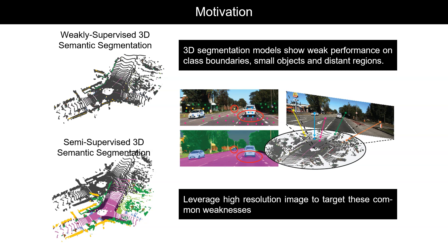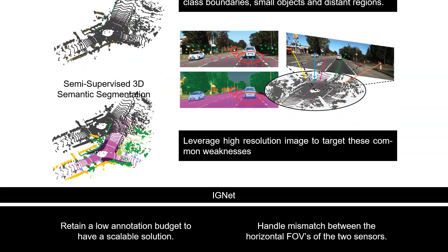Here, we will present IGNet, a 3D network that leverages image guidance while not only retaining the data-efficient setting, but also handling the mismatch between the horizontal field of views of the two sensors.